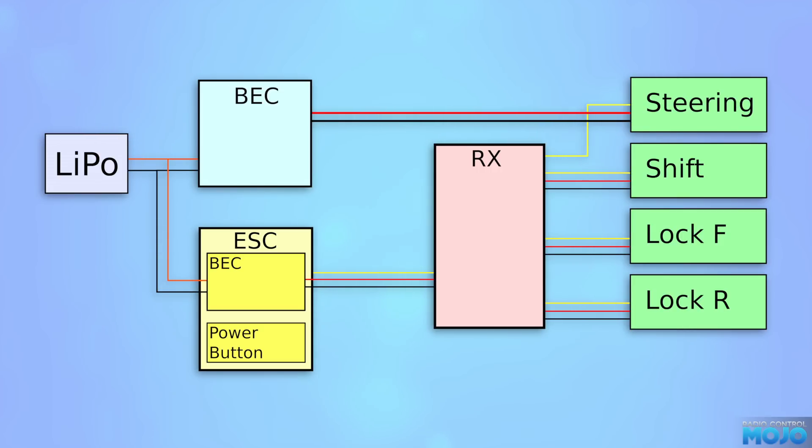That's not the end of it though. There's a downside to this install. As soon as we connect the battery, the external BEC will instantly power on, powering up the steering servo. The rest of the radio system only powers on after pressing the power button on the ESC. Not the end of the world, but we can do better.